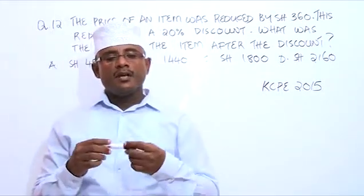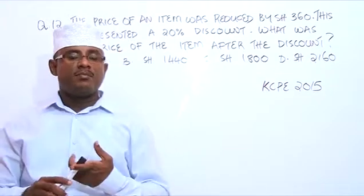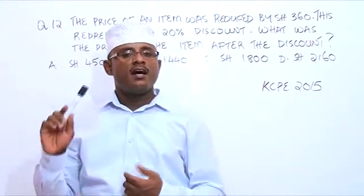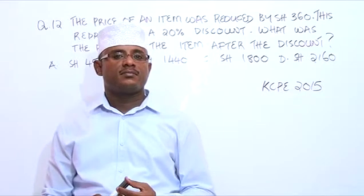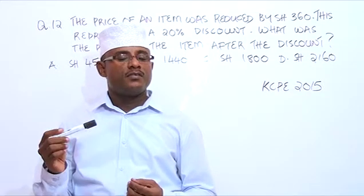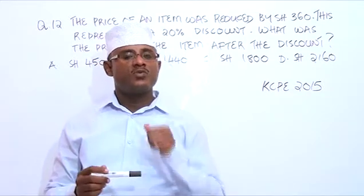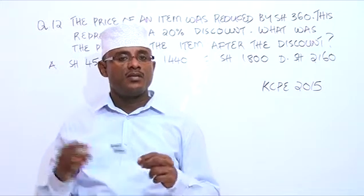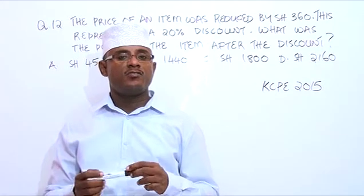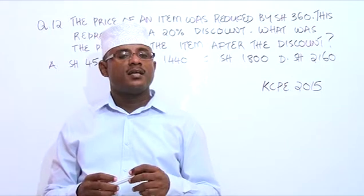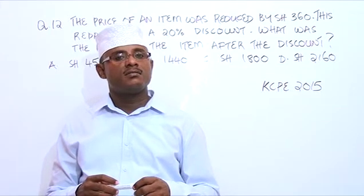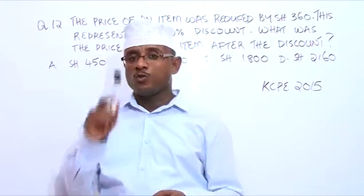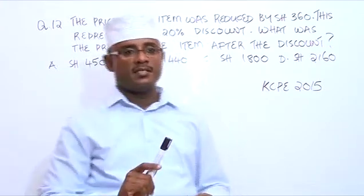The price of an item before a discount is 100%. If you are given a discount of 20%, then whatever you are going to pay is 100% minus the discount of 20%, which gives us 80%. So you are going to pay 80%.